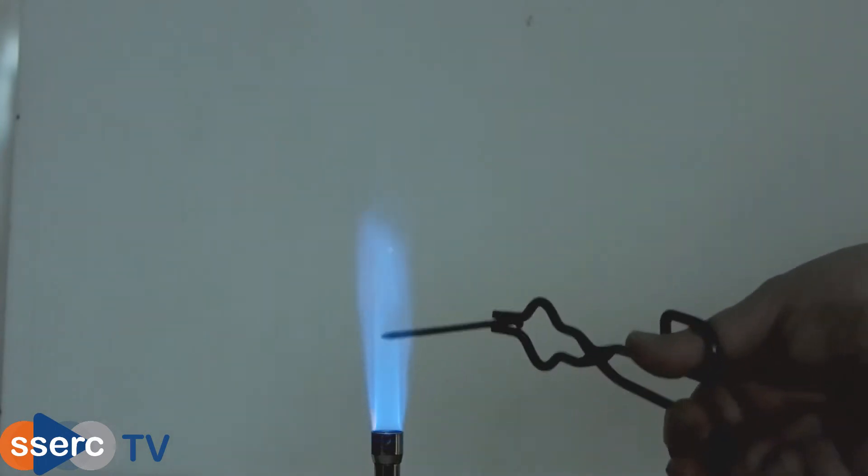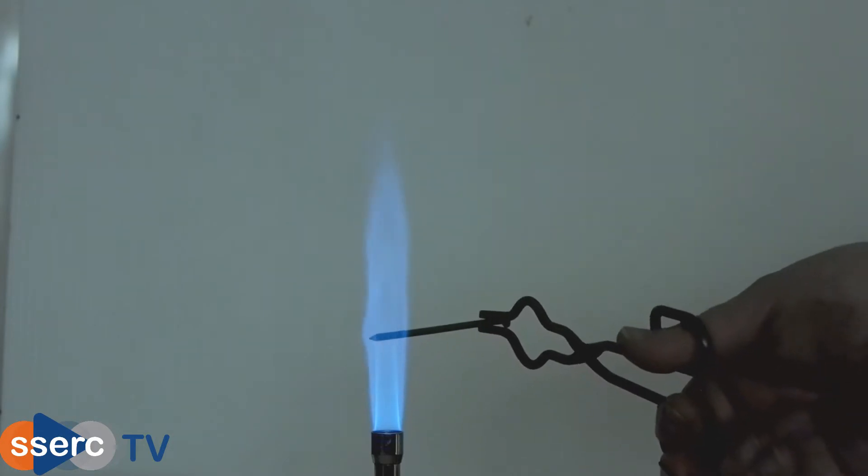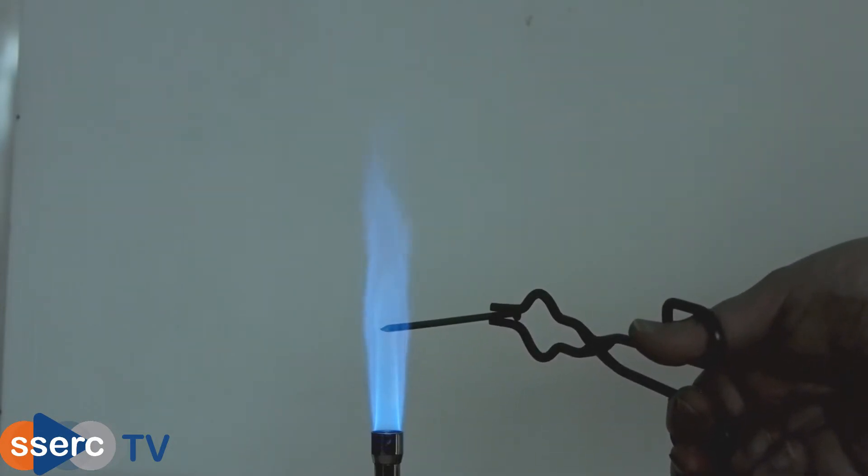If you hold an iron nail in a bunsen burner flame very little happens. If you hold it there long enough it will glow red-hot but there's no real chemical change.